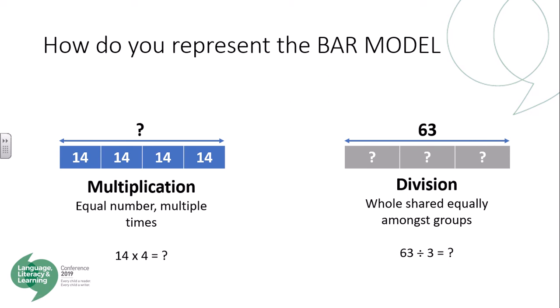When we look at multiplication and division as inverse operations, it's the same thing. Multiplication does not have a total, but it has equal groups multiple times — in this case it's 14 four times, which we can see down here: 14 times four. With division, we have our total, and we know the equal number of groups, we just don't know how many is shared equally among those groups. This is a visual representation of multiplication and division, their similarities and where they slightly differ, so you know the correct operation to choose depending on the question.